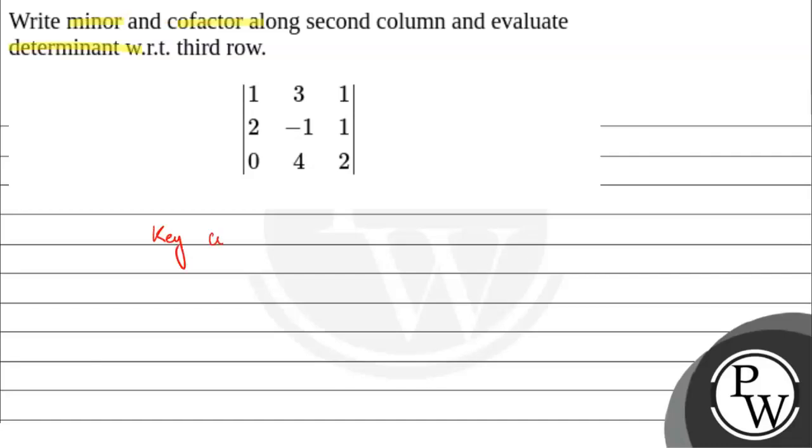We have a key concept we use: first minor and second cofactor. The minor is, let's say for element a₁₂. We will have elements a₂₁, a₂₃, a₃₁, and a₃₃. We will solve this and get the minor. Similarly, cofactor is the same as minor but multiplied by minus 1 to the power i plus j times M_{ij}, where i denotes row and j denotes column.